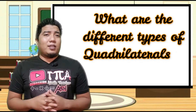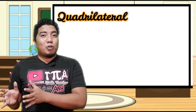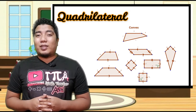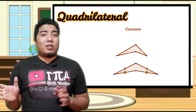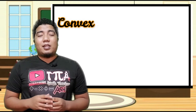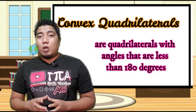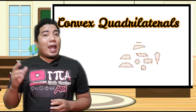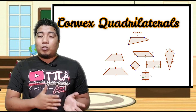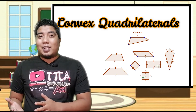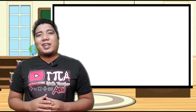The next question is: what are the different types of quadrilaterals? Quadrilaterals can be grouped in two. The first group is what we call convex quadrilaterals, and the second group is called concave quadrilaterals. Convex quadrilaterals are those in which all angles are less than 180 degrees — meaning each angle can range from acute to right to obtuse, but not reflex angles, because reflex angles are more than 180 degrees.